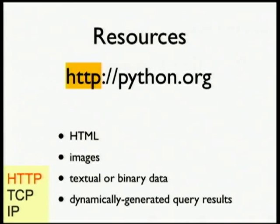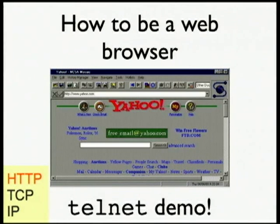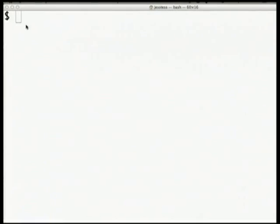You request resources, which can be pretty much anything — HTML web pages, images, dynamically generated content. Like if you visit whattimeisit.com, it spits back the current time, dynamically generating a response to that request. One of the really cool things about HTTP is that it's just plain text, line-delimited, a very human-readable protocol. So if we wanted to, we could fake being our own web browser pretty easily using a tool called Telnet.